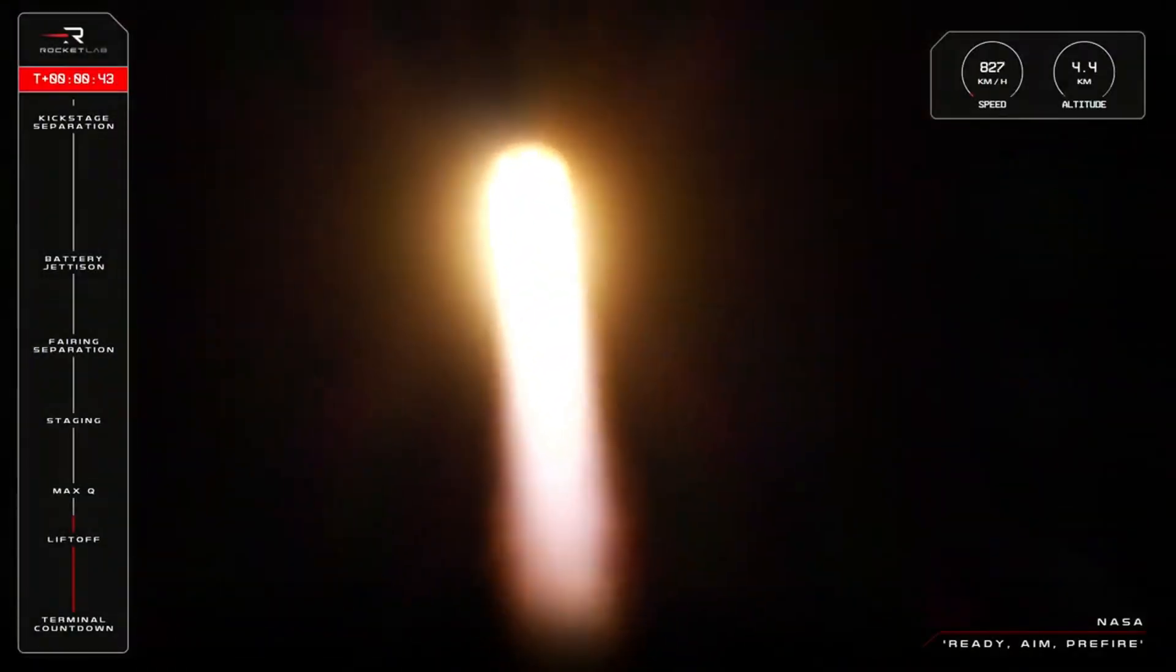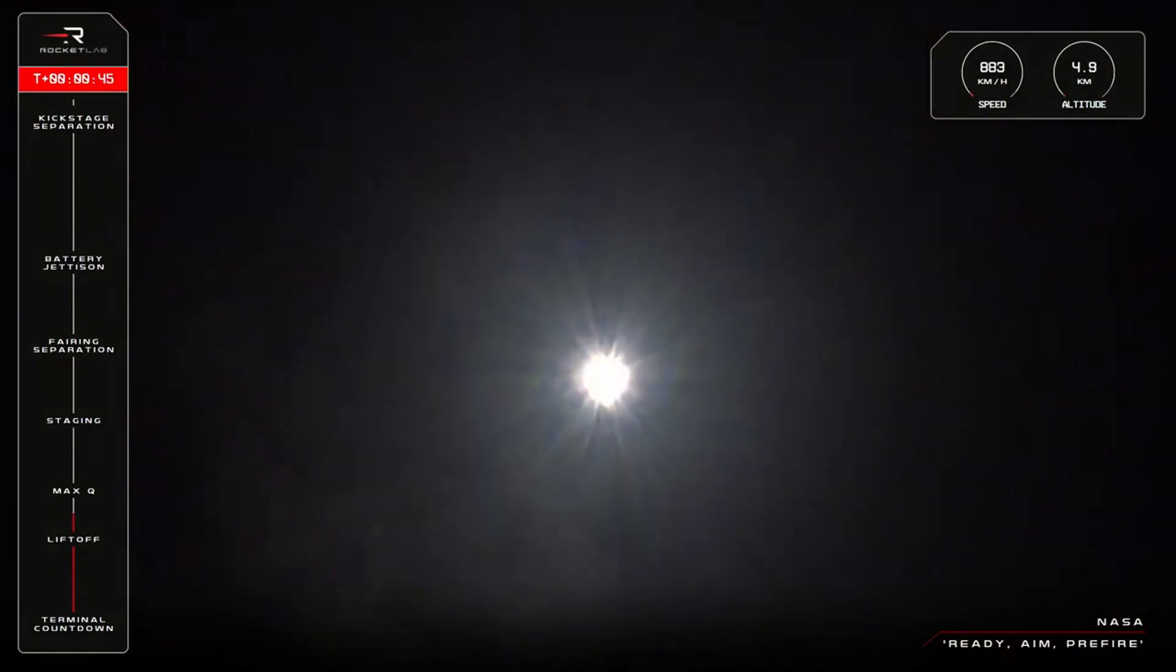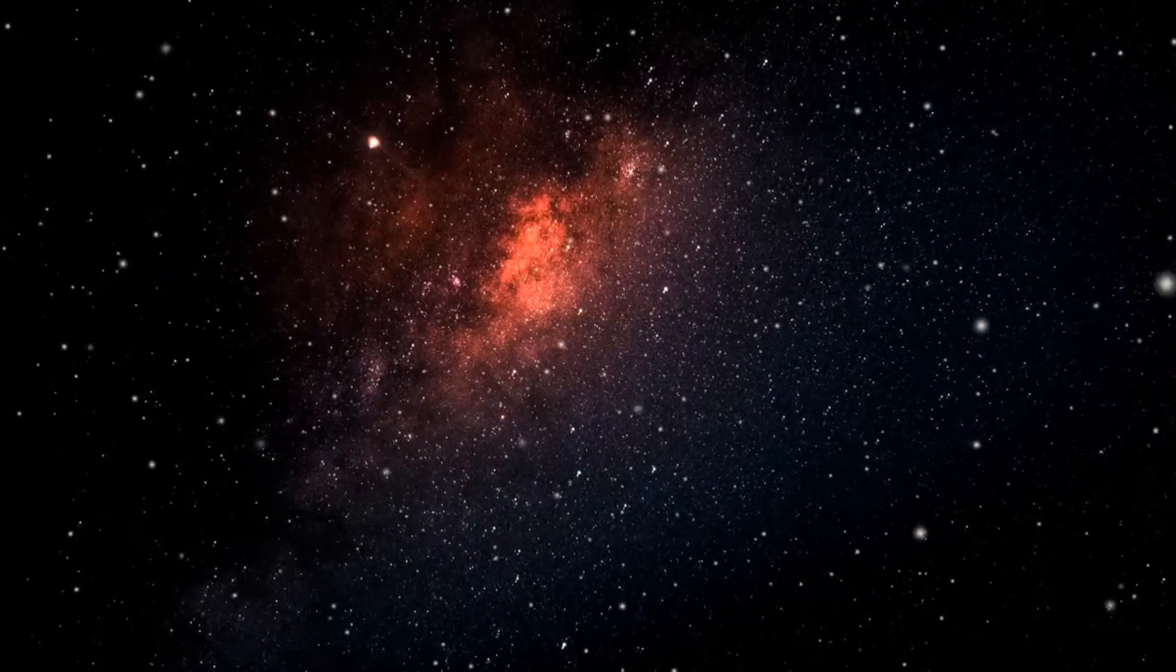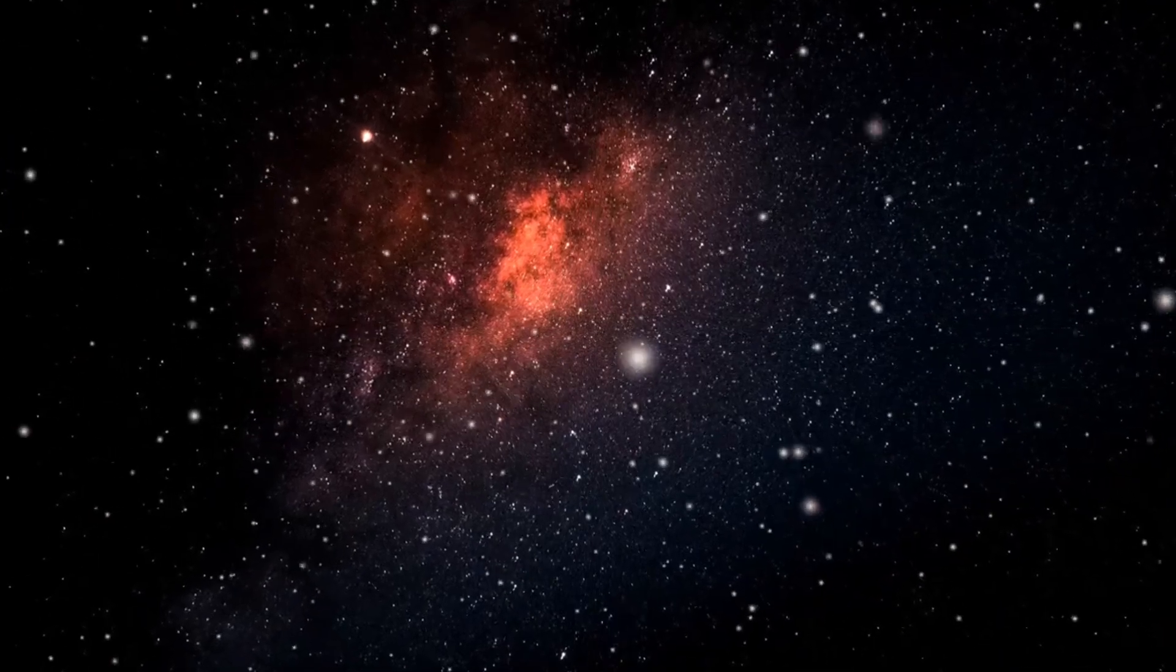Electron Rocket lifted off from Rocket Lab's New Zealand site today at 3:41 a.m. EDT, 07:41 GMT, 7:41 p.m. New Zealand local time.